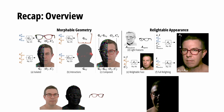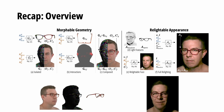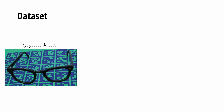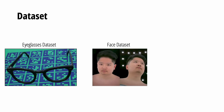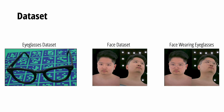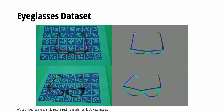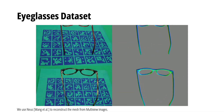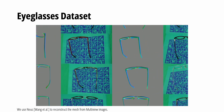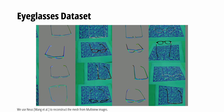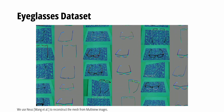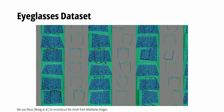To recap, we first train the geometry, then freeze the geometry and train the Relightable Appearance. To train our model, we capture three different datasets: an eyeglasses dataset, a face dataset, and a face-wearing-eyeglasses dataset. In the eyeglasses dataset, we collect multi-view images of eyeglasses and reconstruct their meshes — showing multi-view inputs and reconstructed meshes of 43 eyeglasses.